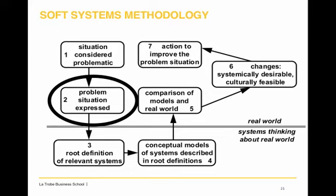Following this, going below the line, we need to apply systems thinking about the real world in order to fix real world problems. In step three, you identify the root causes of relevant systems and define those systems. Then you develop conceptual models of the systems you have originally described. Following this, you compare these to models of the real world and identify in stage six what changes are required — those that are systematically desirable, or in other words the leverage points in the system, and that are culturally feasible. Based on that, you take action to improve the problem or situation.